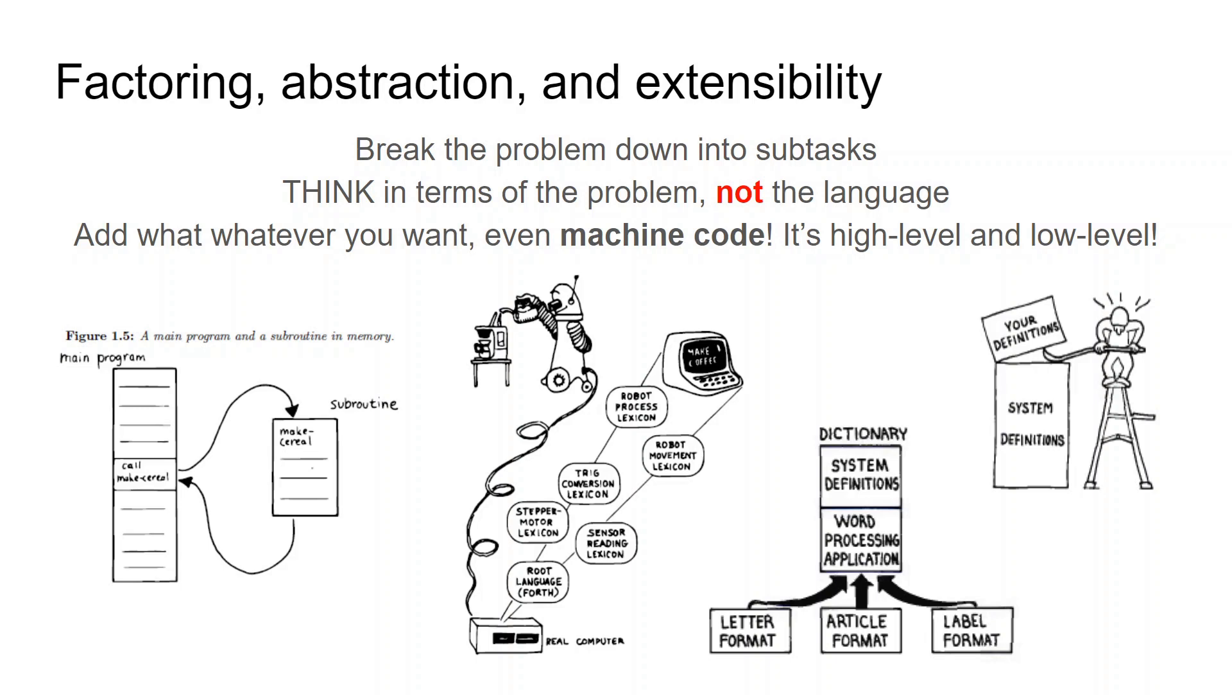Now that gets to extensibility. Forth systems can be really small. The Pygmy Forth system I use in MS-DOS is about 10K and then you build new word definitions on top of that. It's a very easily extensible language and you can easily break it apart into different modules, say, that you'd find in a word processing application in this illustration on the right from Starting Forth.